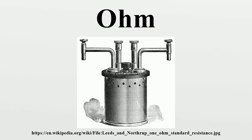In the third report of the committee in 1864, the resistance unit is referred to as the B.A. unit, or OMED. By 1867 the unit is referred to as simply OM. The B.A. OM was intended to be 10^9 CGS units, but owing to an error in calculations the definition was 1.3% too small. The error was significant for preparation of working standards.